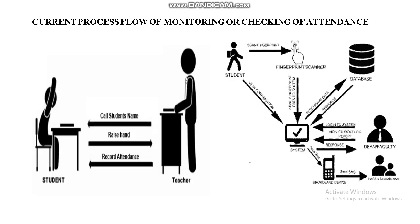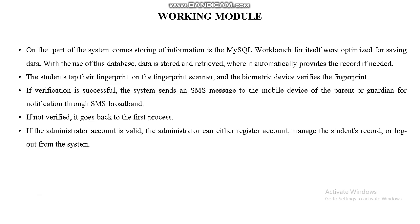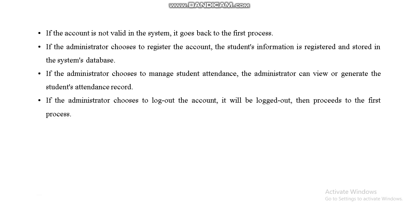This is the current process flow for monitoring and checking attendance, and this is our proposed system. In the working model, students place their fingerprint on the fingerprint scanner and the biometric device verifies it. If verification is successful, the system sends an SMS message to the mobile device of the parent or guardian. If the administrator account is valid, the administrator can register accounts, manage student records, or logout. The administrator can also view or generate the student's attendance record.